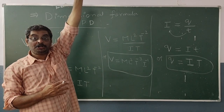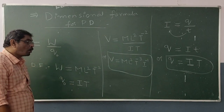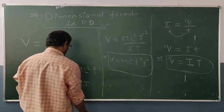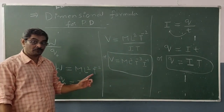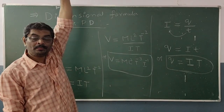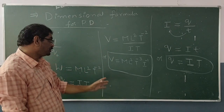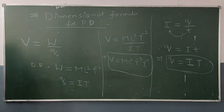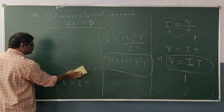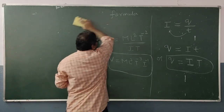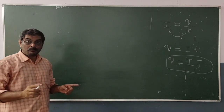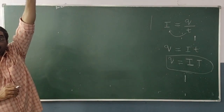So the dimensional formula for Potential Difference is ML²T⁻³I⁻¹. Once you are familiar with all these important things, there is one more important definition you need to know.